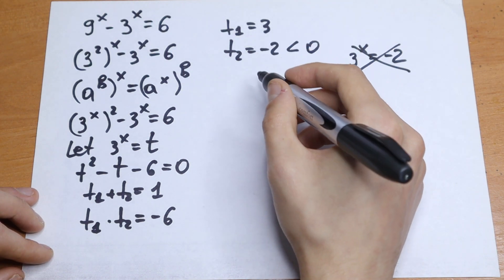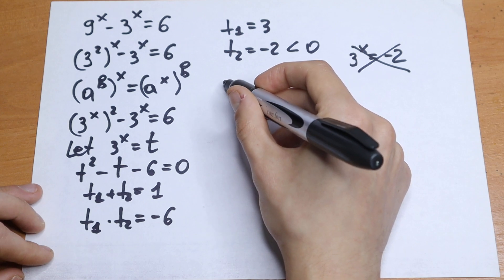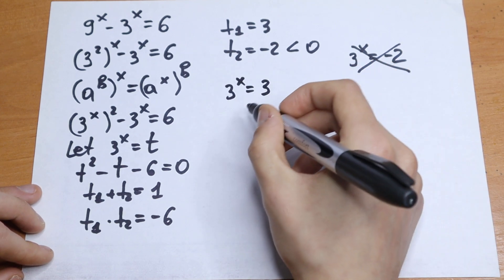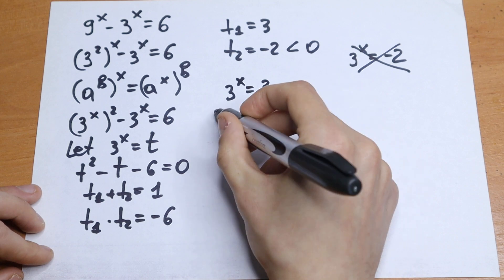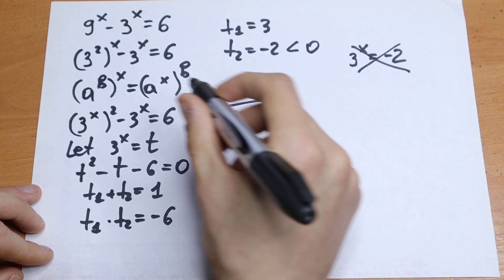We will have only one root: t equals 3. So 3 to the power x equals 3, giving x equals 1. This is the one and only solution, and you can check it.